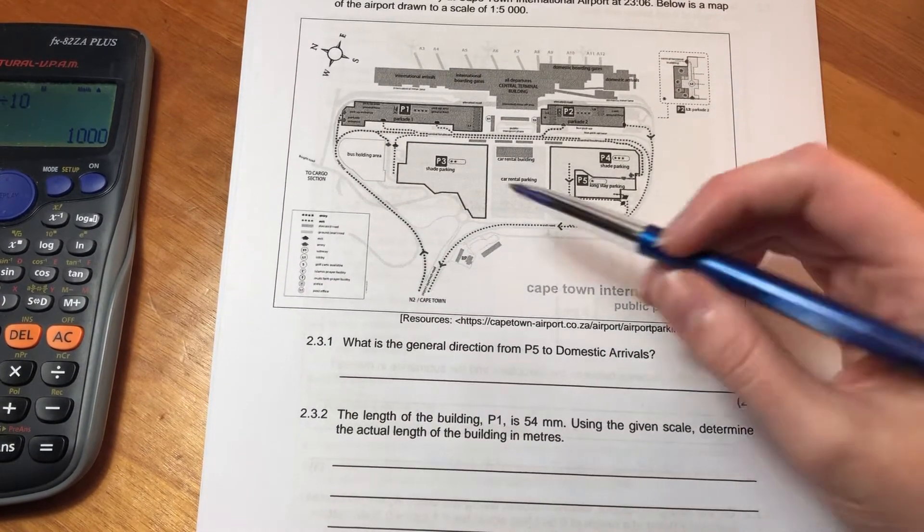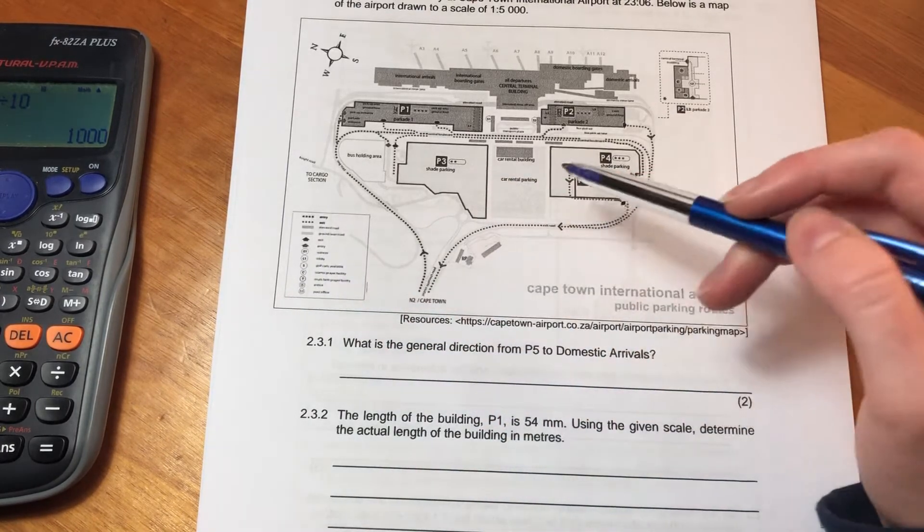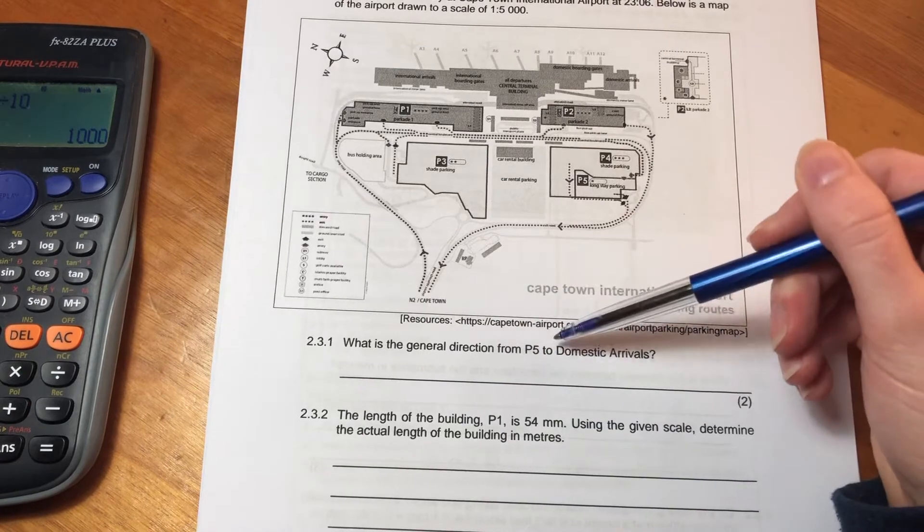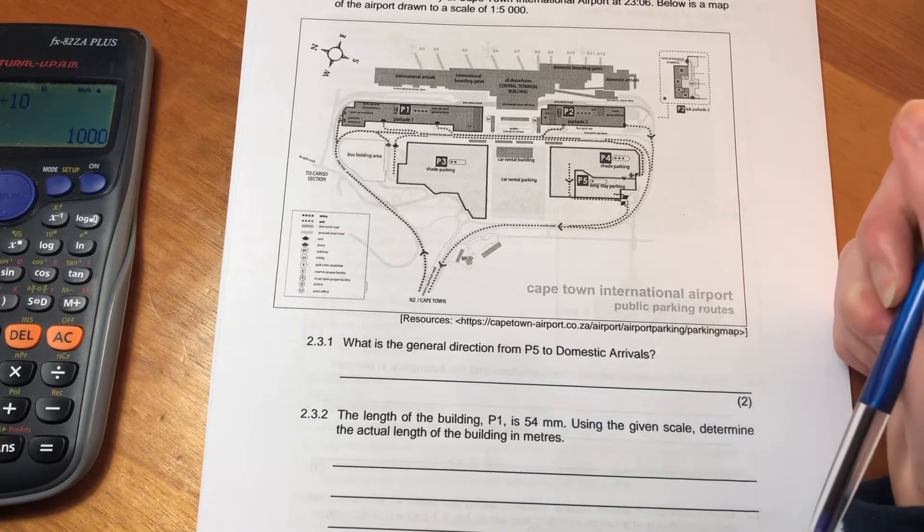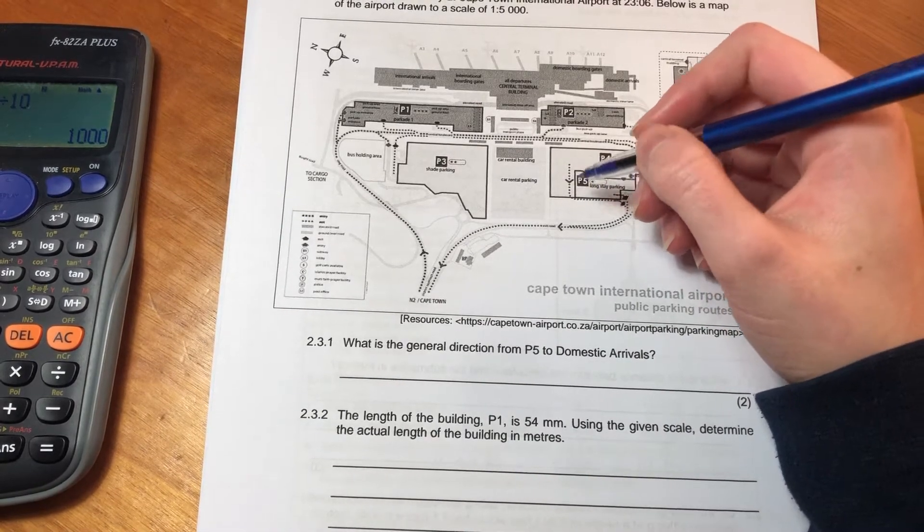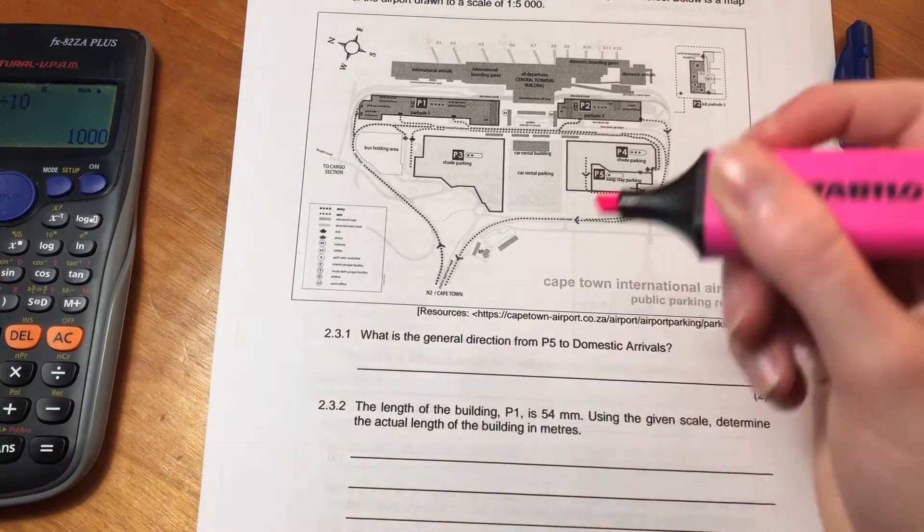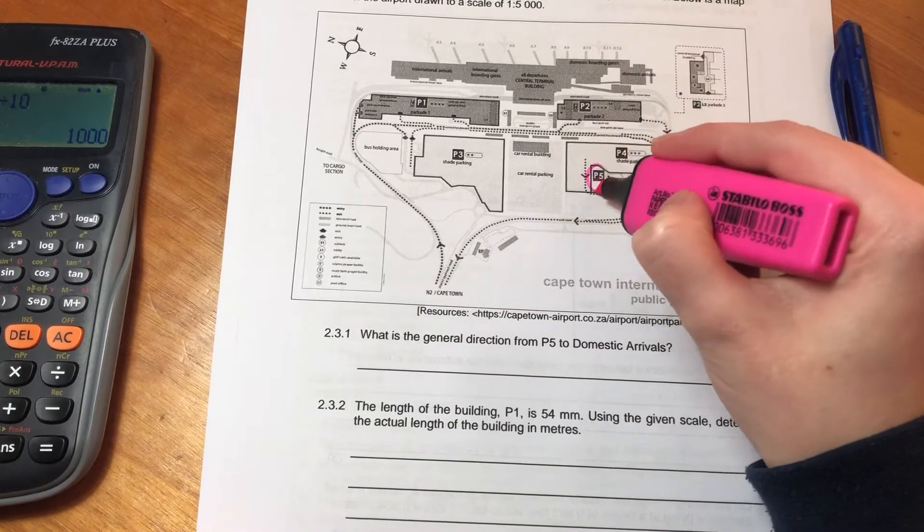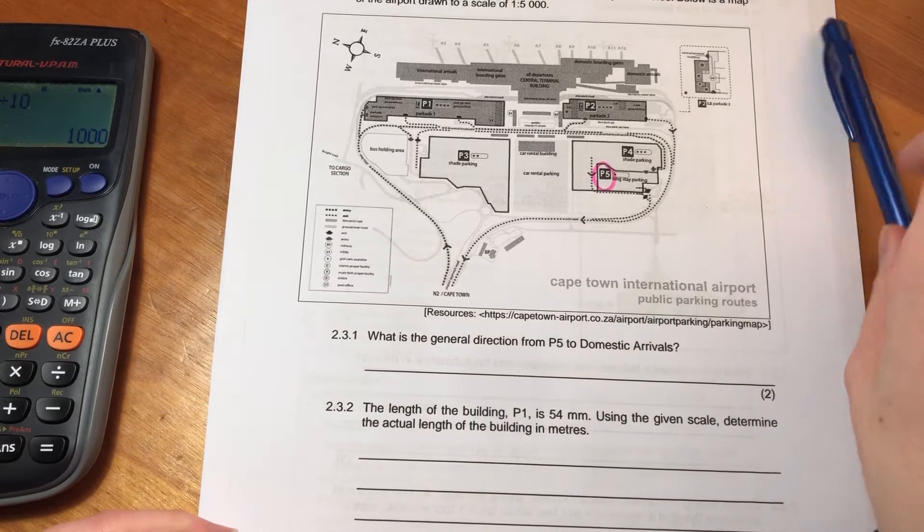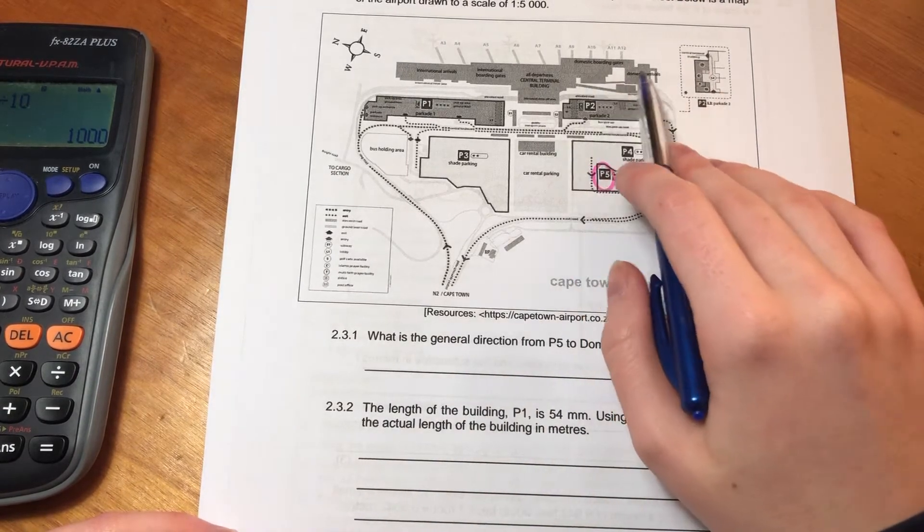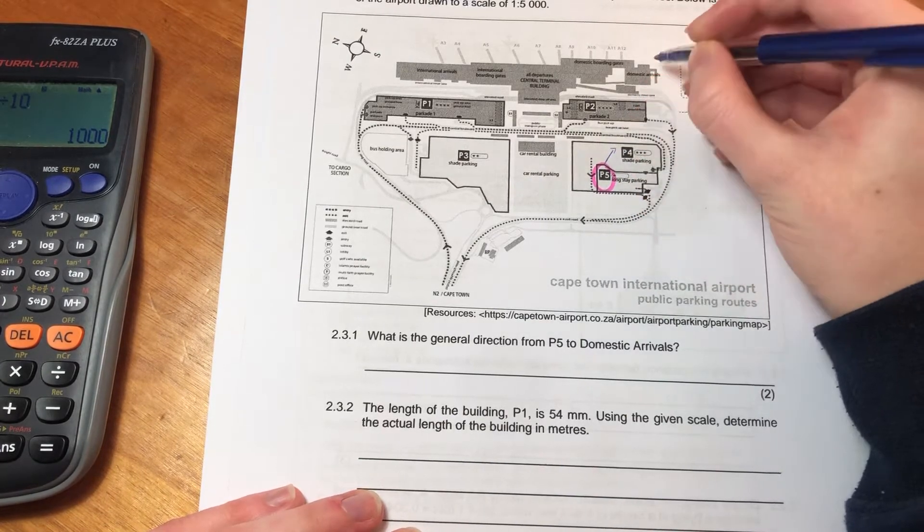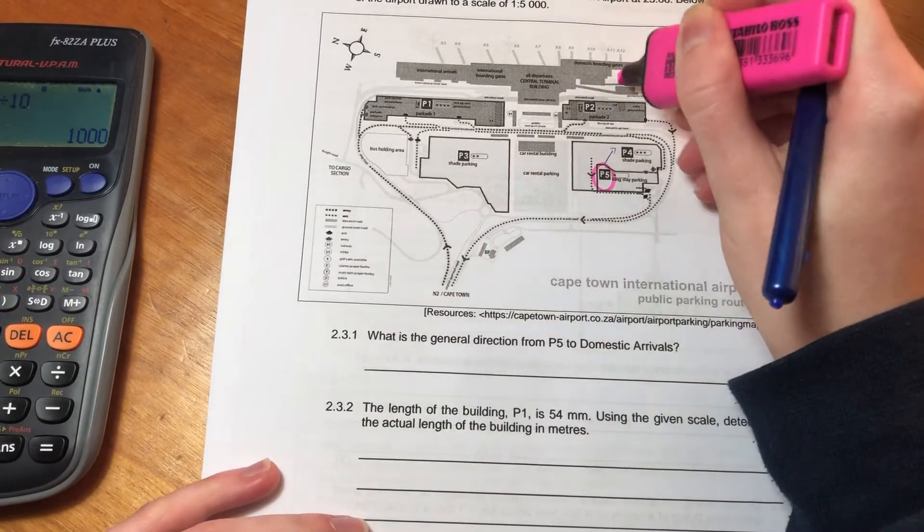You can't see anything that's on that. I hope they don't ask us anything on the key because it's very small. Okay, so what is the general direction from P5 to domestic arrivals? So here's P5. Let me just get a little highlighter. So there's P5. And let's see, where is domestic arrivals? There's domestic arrivals over there. So it's kind of like in that direction there, just so that you can see where it is.